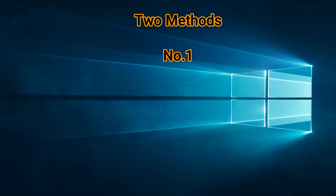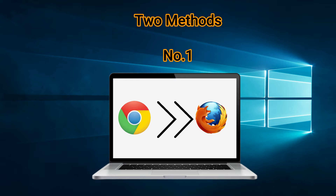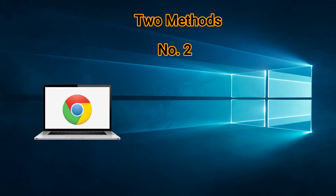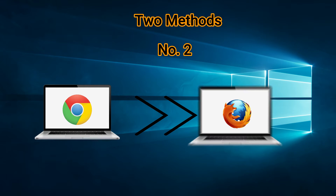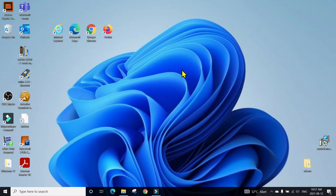Usually there are two methods. Method number one is when you switch from one browser to another browser using the same computer. Method number two is when you are upgrading your computer and moving your favorites and bookmarks from one computer to another. Today in this video we mainly focus on the second method, because the first one is kind of included in it.